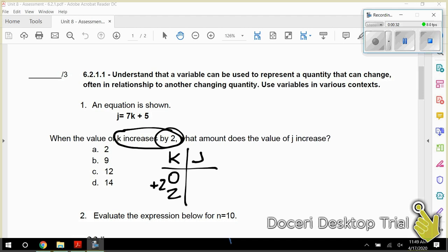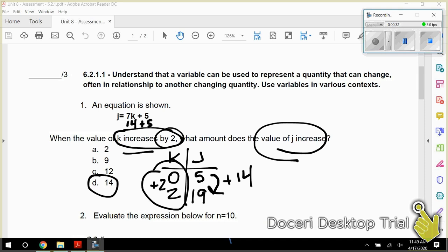If I put 0 in, it would be 7 times 0 is 0, plus 5 is 5. Now if I put 2 in, 7 times 2 is 14, plus 5 is 19. The question is asking us, how does J increase as K increases by 2? K went from 0 to 2, and J went from 5 to 19. So it went up by 14. So 14 is the correct answer. As K increases by 2, J increases by 14.